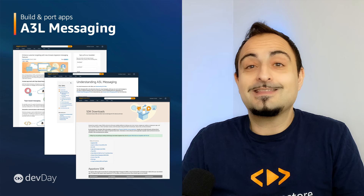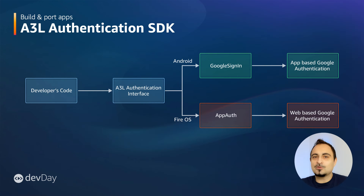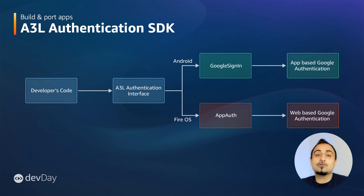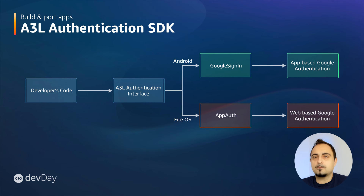Next up is the new A3L Authentication SDK, which lets developers authenticate users with Google Sign-In and Login with Amazon on both Google Play and Amazon App Store. Any app built using the A3L Authentication SDK can now provide the sign-in experience on both platforms without any code changes. The SDK provides an identical flow to Google Sign-In, meaning no need for customers to onboard and learn a different path, and apps with existing Google Sign-In can now quickly support Amazon device customers.